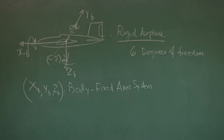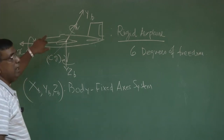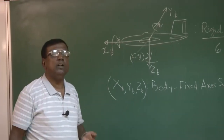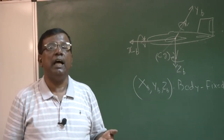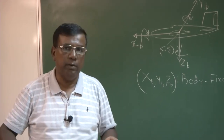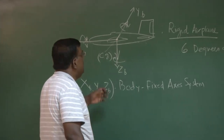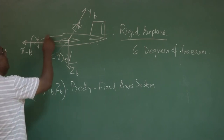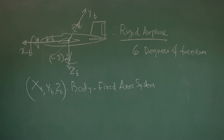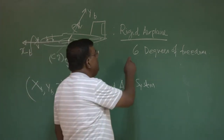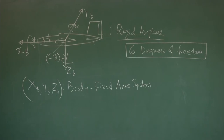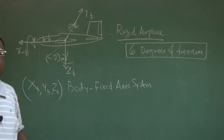Please understand, I have written the word 'rigid airplane.' That means throughout the analysis the distance between any two points on this airplane remains constant. For a highly maneuverable airplane with high aeroelastic behavior, the airplane could flex, but here we are talking about rigid, meaning if you pick up any two points, their distance remains constant. So we now need to develop equations of motion using this six-degrees-of-freedom approach.